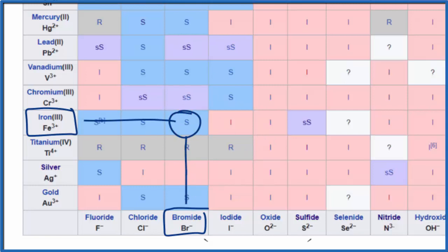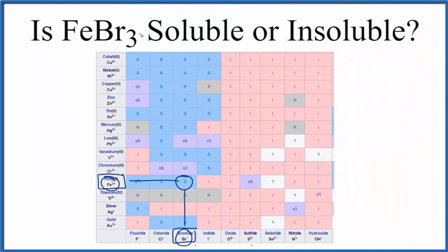So when you put iron 3 bromide FeBr3 in water we would expect it would dissolve into the Fe3+ ion and the Br-, the bromide ion. And we'd have three bromide ions for every one iron 3 ion.